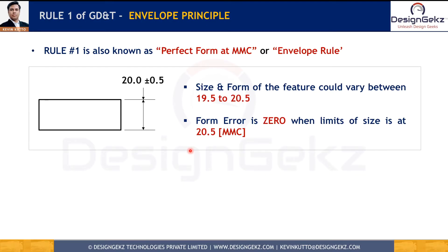Now that we understand limits of size, let's understand Rule 1 of GD&T, which is also called perfect form at MMC or the envelope rule. This rule states that when an individual feature of size has only a tolerance of size specified and no geometrical control is specified, the size tolerance itself controls the form of that feature. It means that no surface element on this feature shall extend beyond the boundary or envelope of perfect form at maximum material condition.